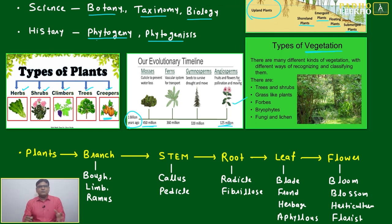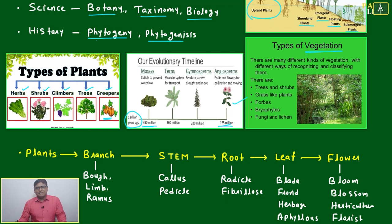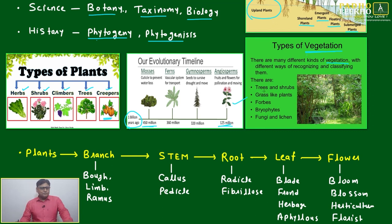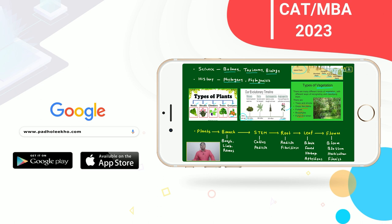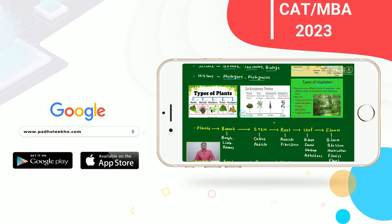This complete system is called vegetation. There are many different kinds of vegetations with different ways of recognizing and classifying them — trees and shrubs, grass-like plants, forbs, bryophytes, fungi — all these different types together make one ecosystem.